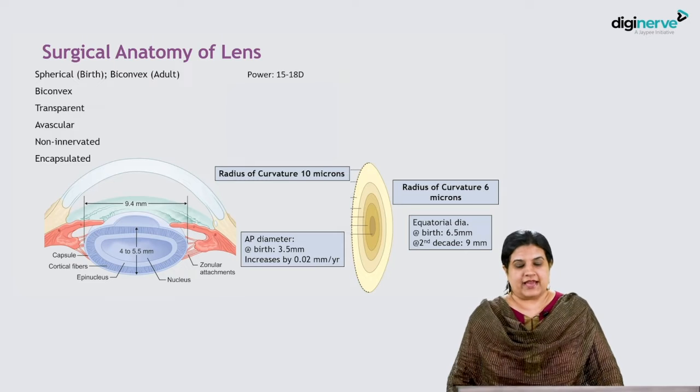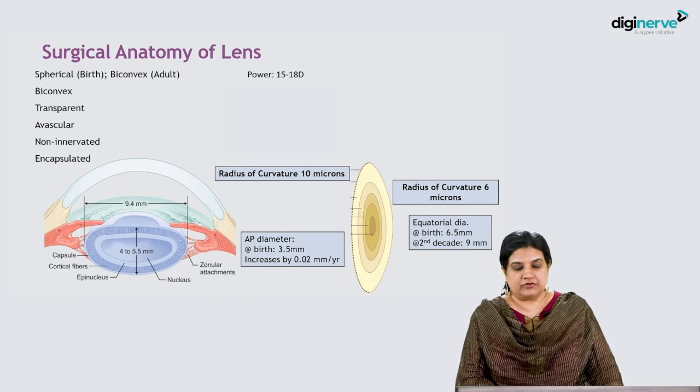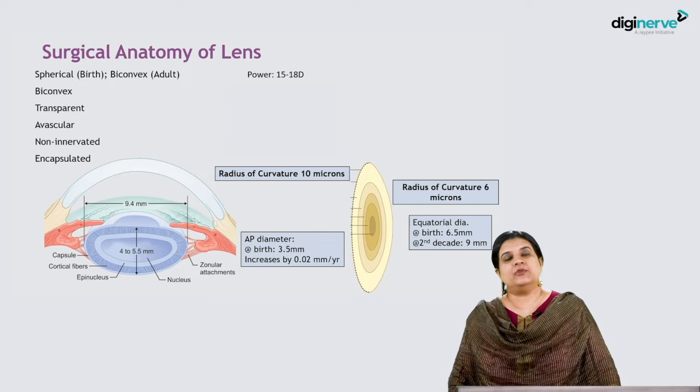The posterior surface radius of curvature is about 6 microns. The central part of the anterior surface of the lens is called the anterior pole, while the central part of the posterior surface is called the posterior pole.